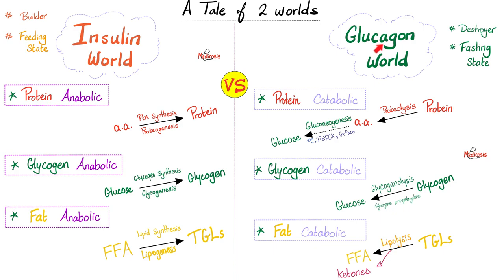In contrast, glucagon, epinephrine, thyroxine, and cortisol are destroyers in the fasting state. They break down proteins into amino acids — those amino acids can make glucose via gluconeogenesis. They break down glycogen into glucose via glycogenolysis. They break those big triglycerides into free fatty acids and glycerides. When you do this, you release ketone bodies — this is called lipolysis.